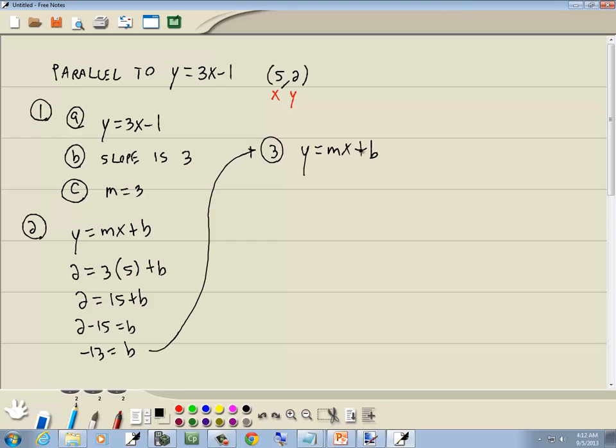Step 3, write our answer down. We plug in the m we found in step 1, which is 3. Plug in the b we found in step 2, which is negative 13. And our answer is y equals 3x minus 13.